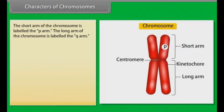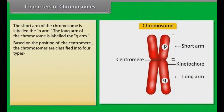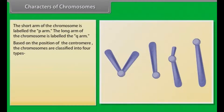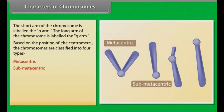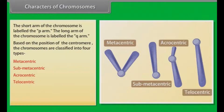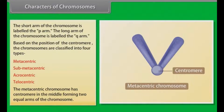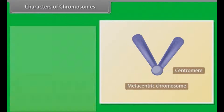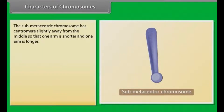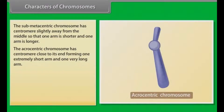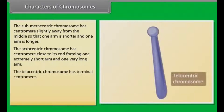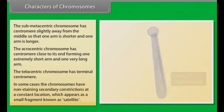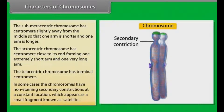The long arm of the chromosome is labelled the Q-arm. Based on the position of the centromere, chromosomes are classified into four types: metacentric, sub-metacentric, acrocentric, and telocentric. The metacentric chromosome has the centromere in the middle, forming two equal arms. The sub-metacentric chromosome has the centromere slightly away from the middle, so one arm is shorter and one is longer. The acrocentric chromosome has the centromere close to its end, forming one extremely short arm and one very long arm. The telocentric chromosome has a terminal centromere. In some cases, chromosomes have non-staining secondary constrictions at constant locations, which appear as a small fragment known as a satellite.